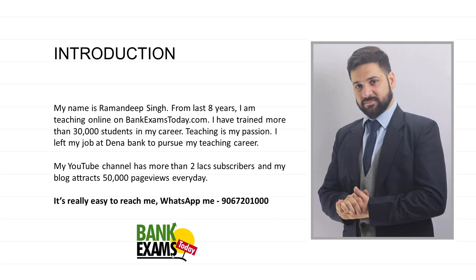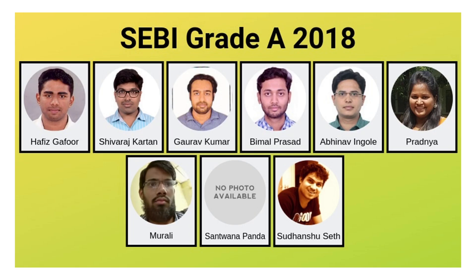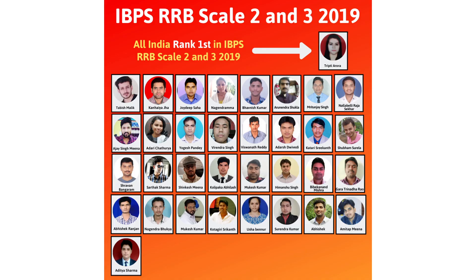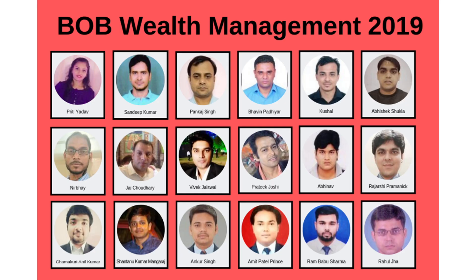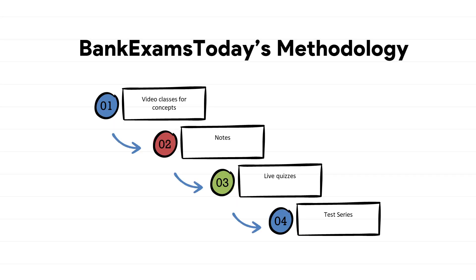We got 12 final selections in SEBI Grade A, IBPS RRB GBO Scale 2 and Scale 3, Bank of Baroda Wealth Management, NABARD Grade A. That's our methodology: we start with concept classes, then notes, then live quizzes, then full-fledged test series.